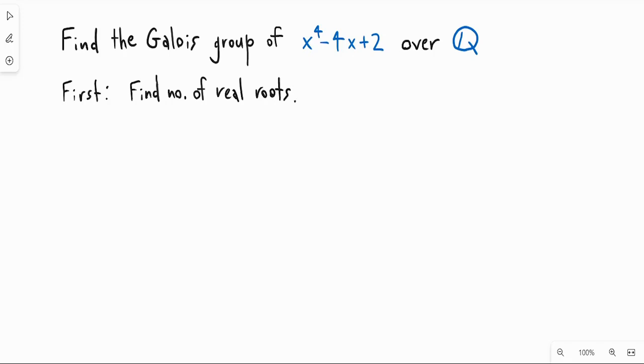Okay, so for this polynomial you can take the derivative. So the derivative here is going to be 4x^3 - 4, and so it's easy to check that the only critical point that this polynomial has is x = 1.